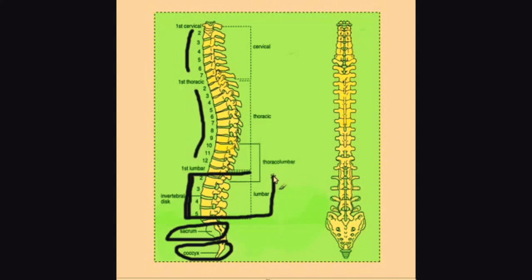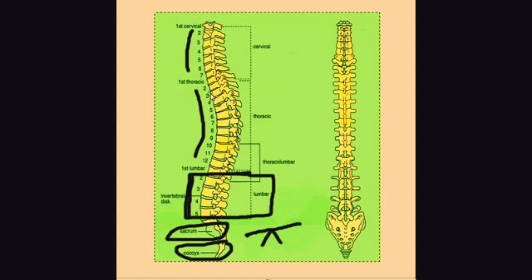This is because the lumbar region houses some of the body's strongest muscles, and they provide a fulcrum or a lever for the body's trunk. Meanwhile, the thoracic area provides a support system for the body's rib cage, and the cervical area provides a support system for the neck.